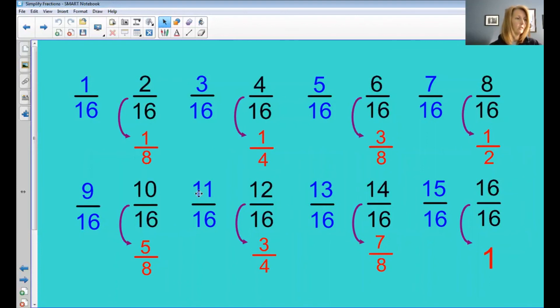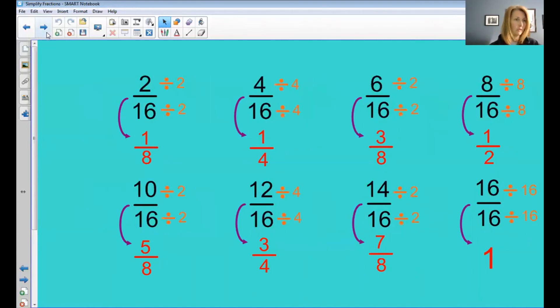So record the number of answers that you got fully correct. And on our next live Zoom call, you can tell me how you did. I've shown the work here. I've kind of shown what you can divide the numerators and denominators by in each of these to get the simplified answer. So you can use this as a reference also. That may help you check your work.